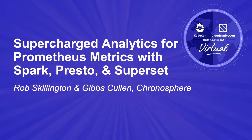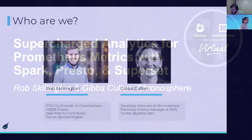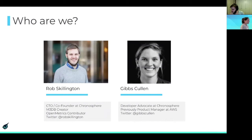A little bit about us before getting into the talk. We have Rob Skillington, currently CTO and co-founder at Chronosphere. Prior to Chronosphere, he was at Uber and was one of the creators of M3DB, and he's also a contributor for Open Metrics. And then myself, Gibbs Cullen — I'm currently a developer advocate at Chronosphere, and prior to that I was a product manager at AWS.